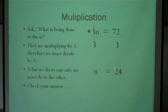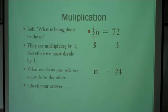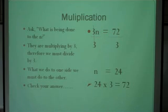To check our answer, we take the 24, put it in n's place, and work the original problem: 3 times 24 is 72 — and we are correct.